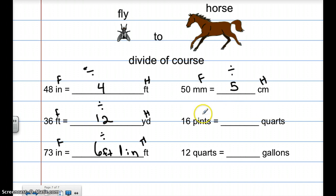Then, pints to quarts, fly to horse, divide of course, 16 pints into quarts. Well, how many pints are in a quart? The pints that are in a quart are going to be 2. So I have to take 16 divided by 2, and that is 8. This is fly to horse, divide of course, quarts to gallon. So there are 4 quarts in 1 gallon. I take 12 divided by 4, and that is 3. So that's our fly to horse.